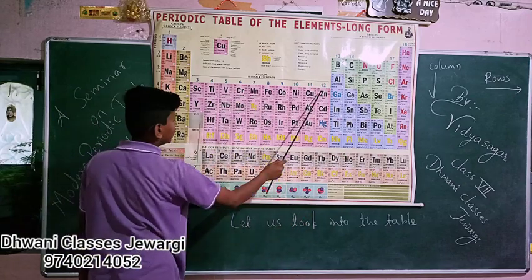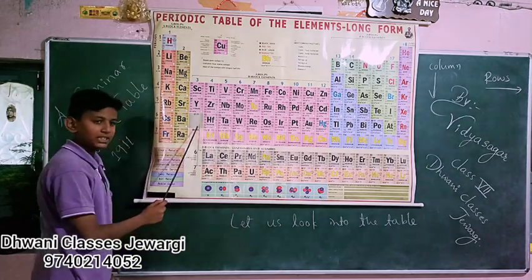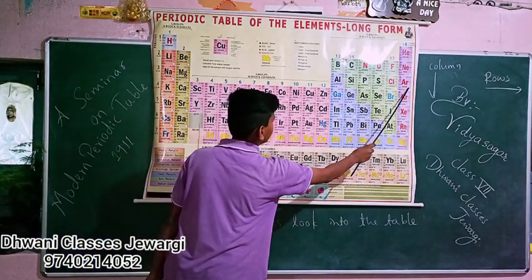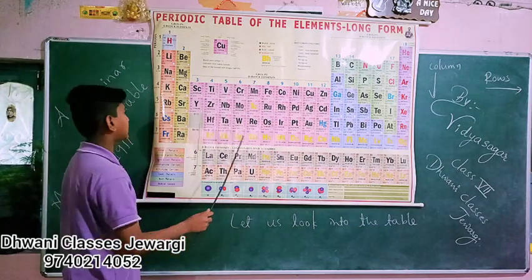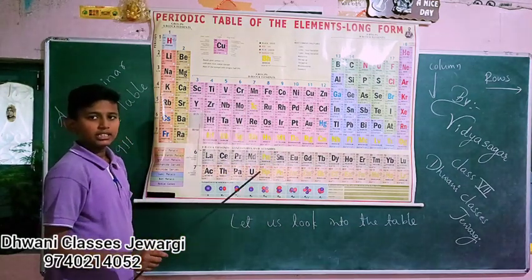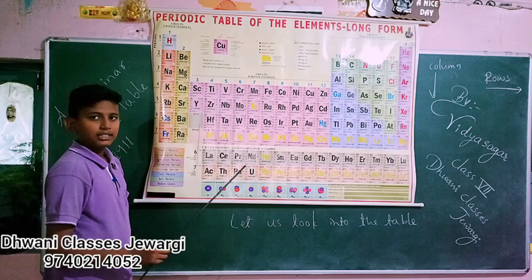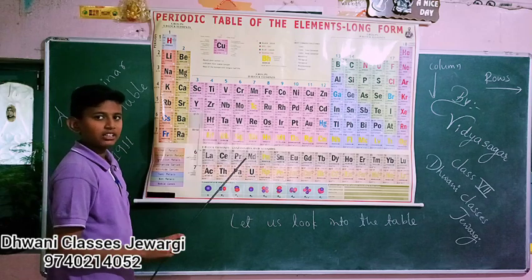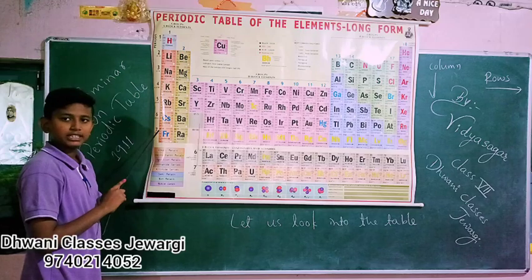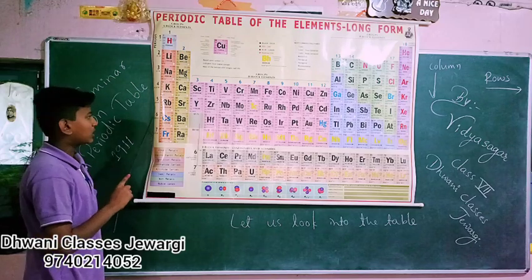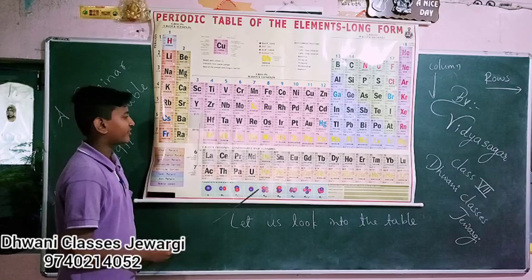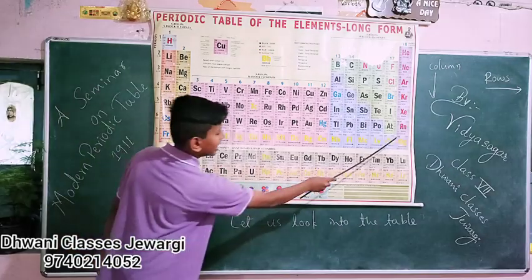And these are the D block elements. As we go along the period, the atomic size decreases because of atomic interaction. As we go down the table, the atomic size increases because of the addition of new shells. The total number of elements discovered so far is 118.